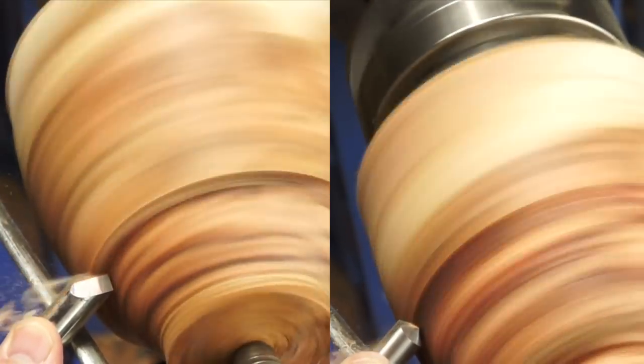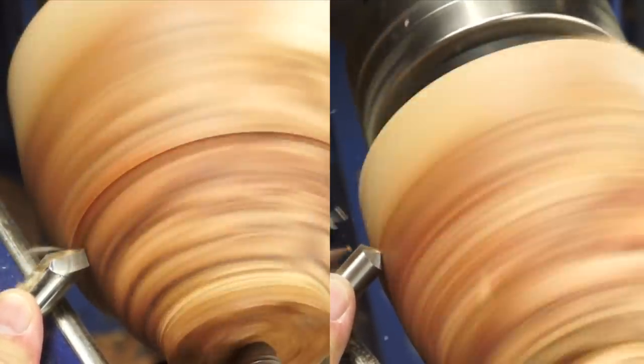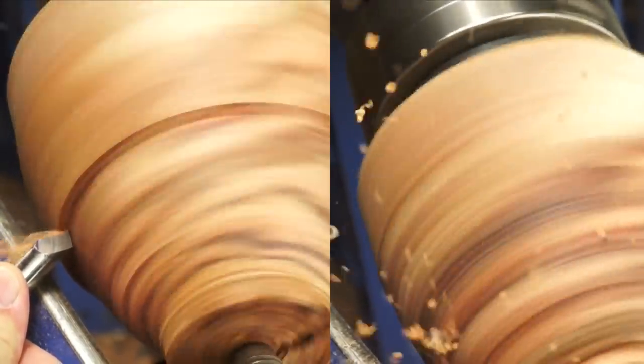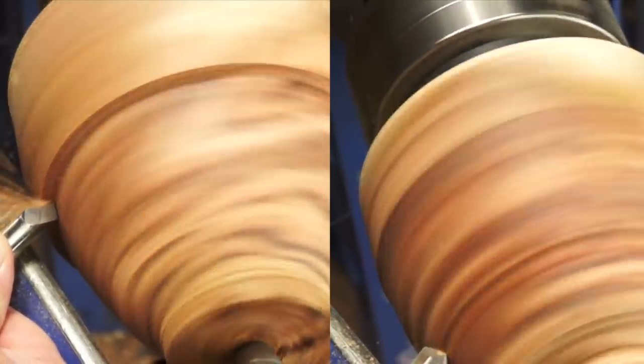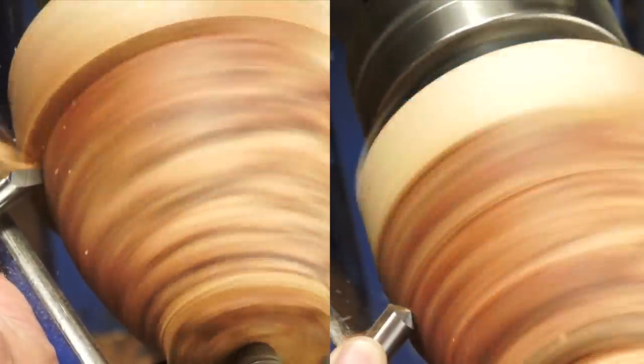The idea behind a side grind profile is to have a larger cutting surface to present to the turning stock. Look at the difference between the size of the shaving taken with a side grind gouge on the left and the straight grind gouge on the right. That will make a huge difference in the time it takes to shape this turning.